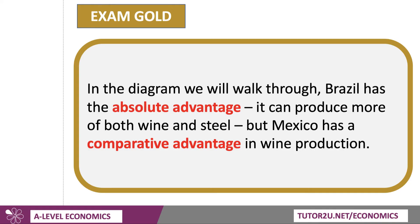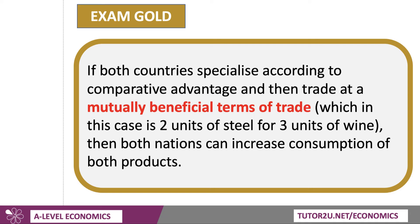In the diagram, Brazil will have the absolute advantage in wine and steel — it can produce more of both. But you'll also find that Mexico has a comparative advantage in wine production. In terms of relative opportunity cost, Mexico has the advantage in specializing in wine. If both countries specialize according to comparative advantage and then trade at mutually beneficial terms of trade — numerically, two units of steel traded for three units of wine — then both nations in theory can increase consumption of both products.